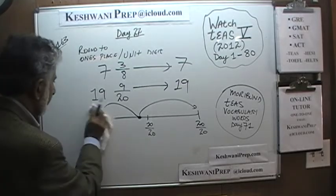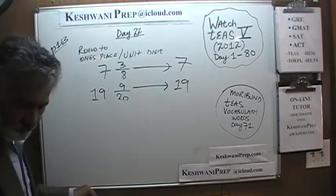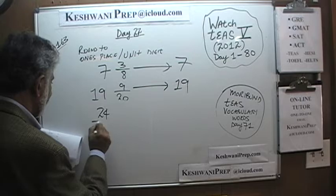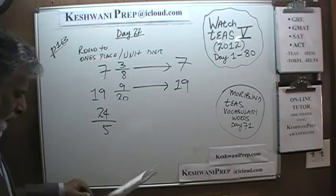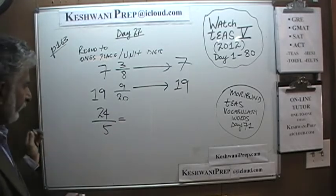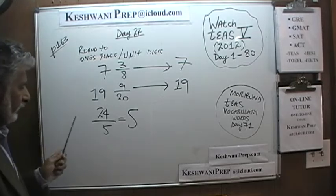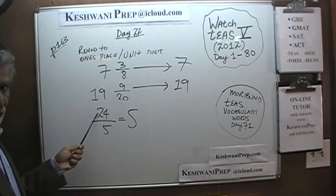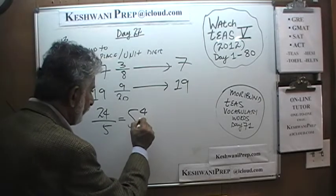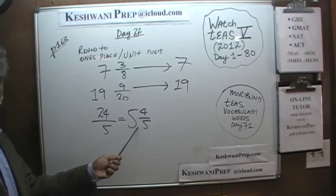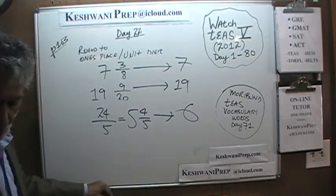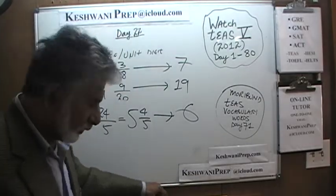Let's do one more — a mixed number: 24 over 5. We need to write this as a mixed number. 24 divided by 5 is 4, and 4 fives are 20, so the remainder is 4, giving us 4 and 4 fifths. 4 fifths rounded to the nearest one's becomes 1. Therefore this quantity becomes 5 when rounded to the nearest one's.